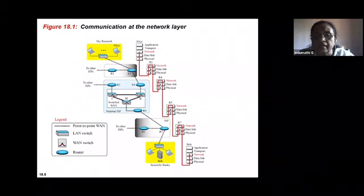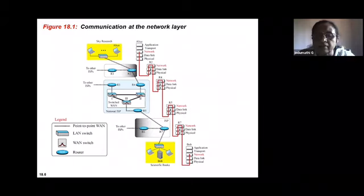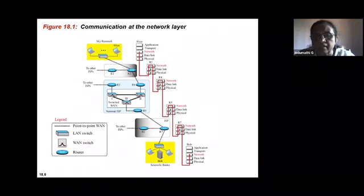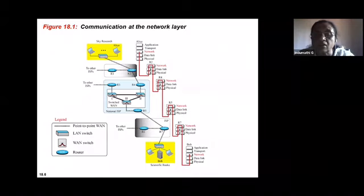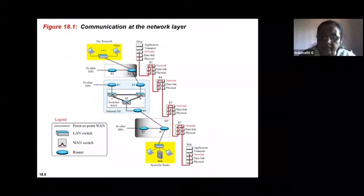After R2, the packet goes to R4, which performs the same decapsulation and re-encapsulation operation, then forwards it onward through R5 and R7 until it reaches the destination link layer switch, which delivers it to the Bob machine. This demonstrates the significance of the network layer in enabling communication between a source host and destination host situated in different networks.